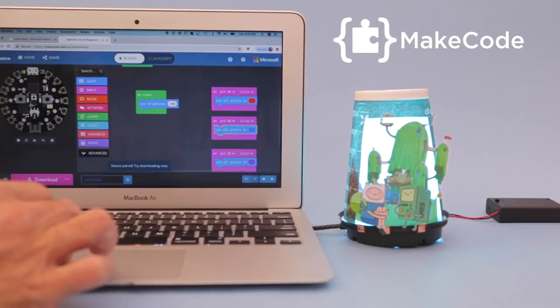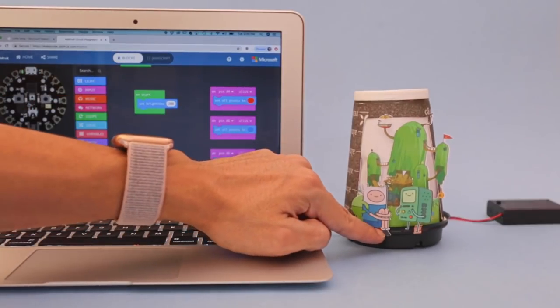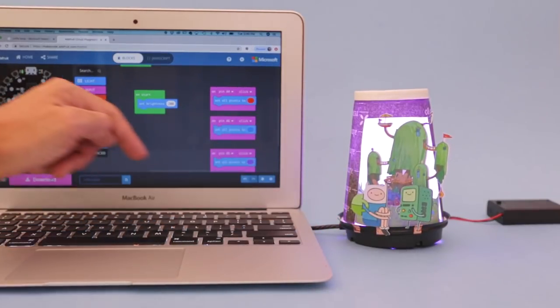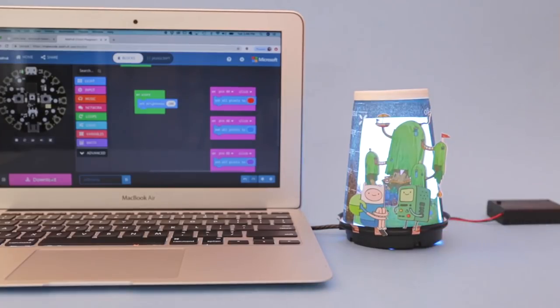Program your Circuit Playground Express using code blocks in Microsoft Makecode. Drag and drop to create interactive lights that change colors by using the sensors and inputs on board the Circuit Playground.